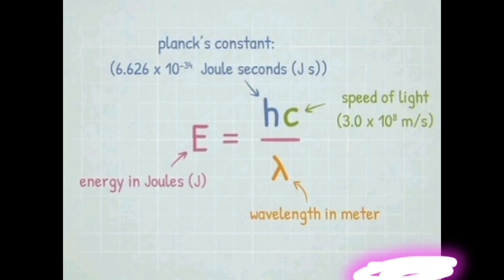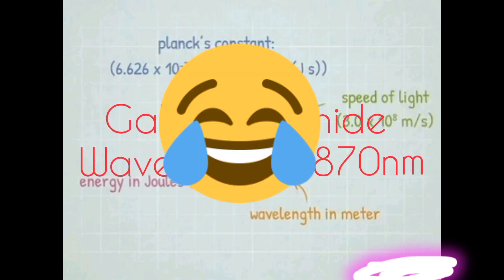For example, combining gallium and arsenic, wavelength would be 800 nanometers using the formula above.